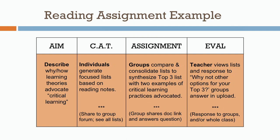The aim is to describe why and how learning theories advocate critical learning. This is a higher education course — we need to think about learning in order to teach. As a classroom assessment activity, I ask students to come to class having generated focused lists based on their reading notes. They share these with groups or in an online forum, so everyone in their group sees everyone else's list. The assignment, completed either in class or online, is to compare and consolidate their list to synthesize a top three — characteristics, whys, and hows about critical learning — and include two examples of critical learning practices advocated under each of these top three. The group shares this document with a link and answers questions I posed in the final evaluation.